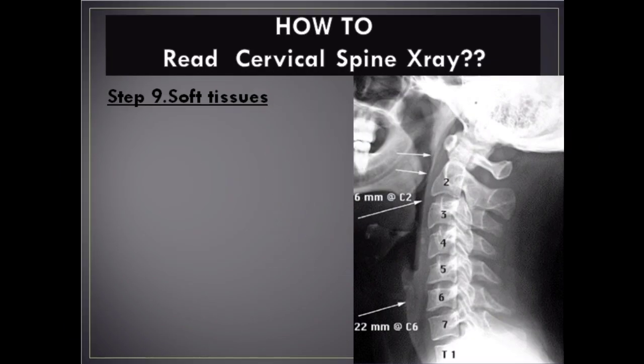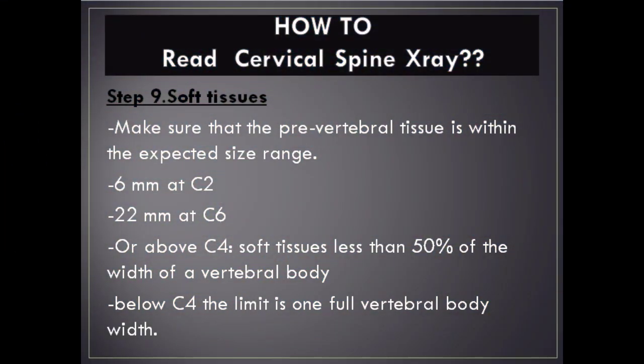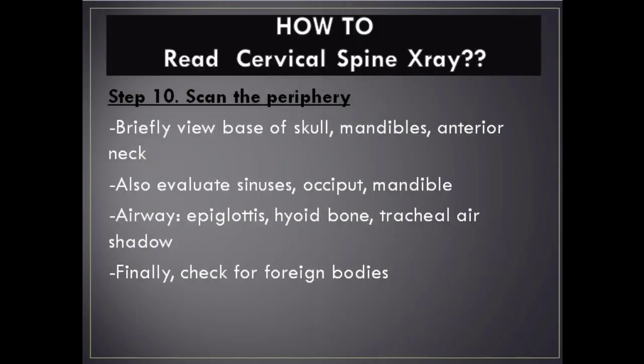Step 9 – Soft Tissues: Make sure the pre-vertebral tissue is within the expected size range — 6 mm at C2, 22 mm at C6, or less than 50% of the width of a vertebral body above C4. Below C4, the limit is one full vertebral body width.